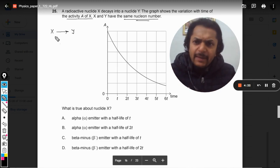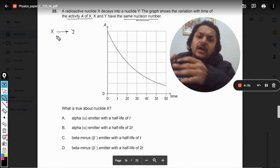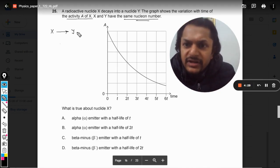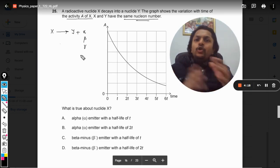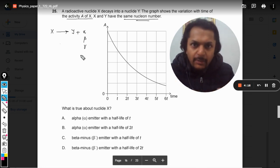Whenever a radioactive decay happens, it does not happen like X is directly converted into Y, but there is some other subatomic particle that is released. There are three options: one is alpha particle, another is beta particle, or there is no particle but only energy, that is gamma. These are the three options that we have.